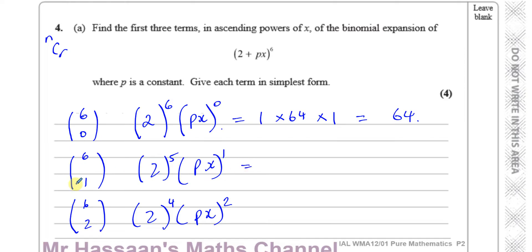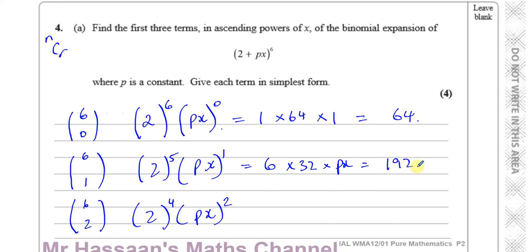Then for the second term, 6C1 is 6, and 2 to the power of 5 is 32, times Px. So 6 times 32 gives us 192, making the second term 192Px.